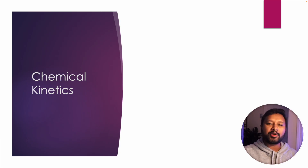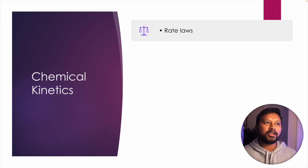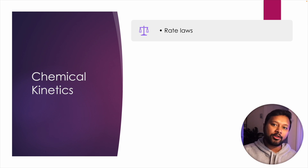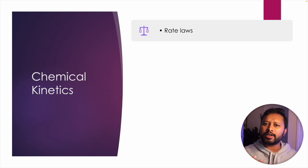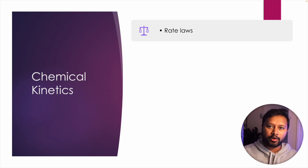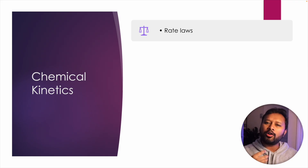Let's go to the next topic: chemical kinetics. The first thing is rate law equations — this is the basic of chemical kinetics where you deal with different rate law equations starting from zeroth order, first order, second order, up to third order. You should also know the equation for nth order reactions and how to find out half-life. This is one of the topics from where a lot of questions have been asked, making it the most important topic from chemical kinetics.